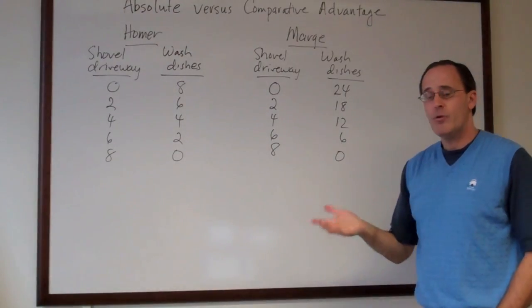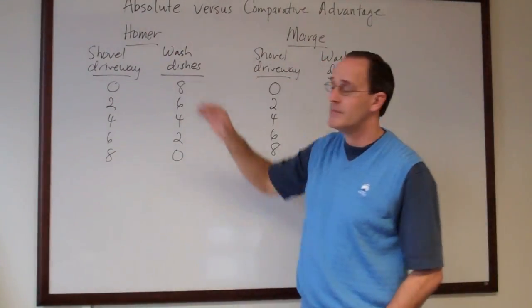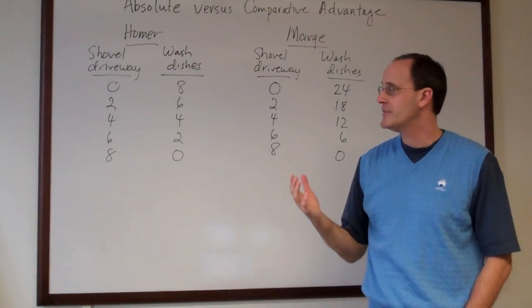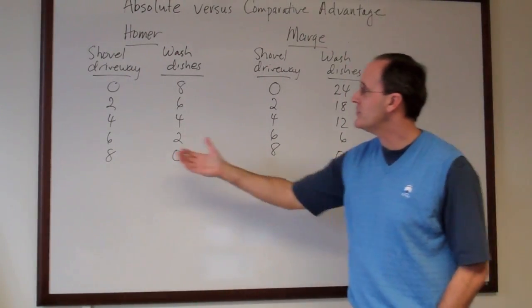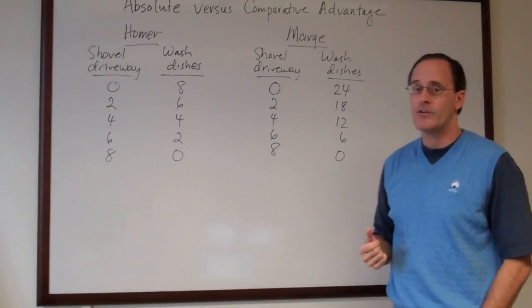That would lead one to normally conclude that Marge has an absolute advantage in the production process. She's at least as good as Homer at shoveling the driveway, and she's substantially better at washing the dishes.